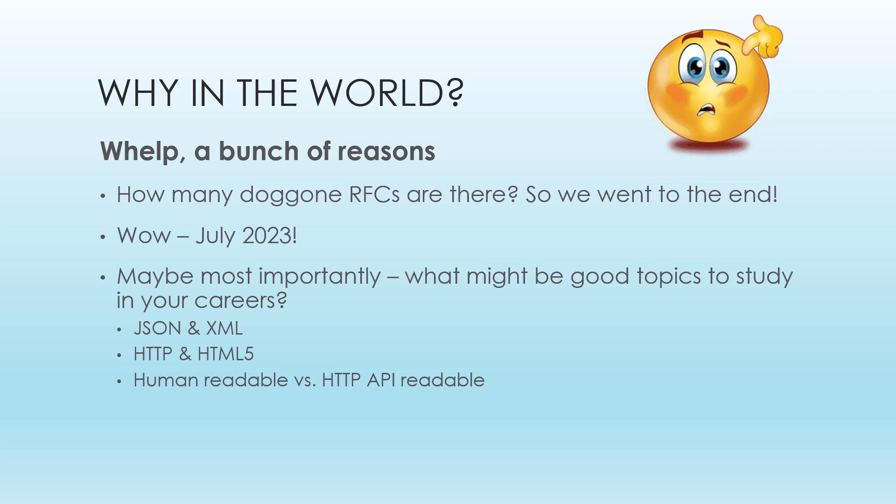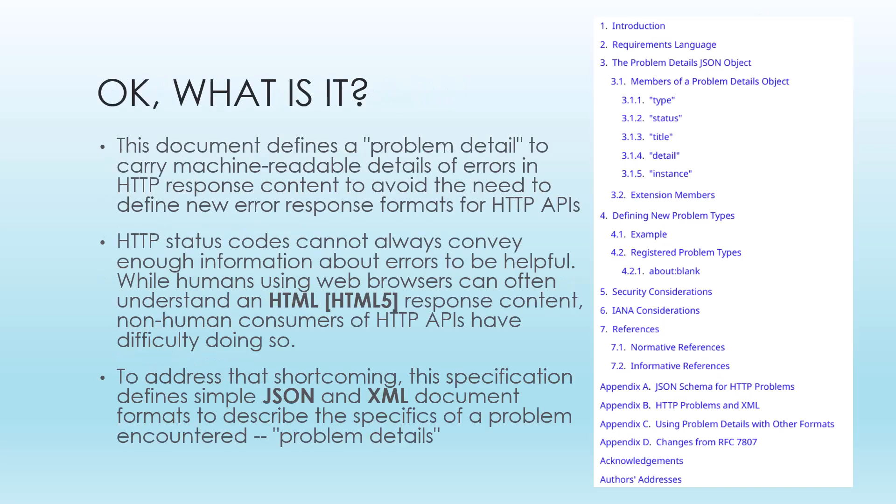The fun thing about this is that HTTP and many standards today are designed to be human-readable — you look at the error codes and sort of know what they're doing. But an HTTP API, some interface with a website or client, gets a code back, and sometimes it's not really helpful for the API itself. That's the whole idea of this RFC. It defines a problem detail to carry machine-readable details of errors, to avoid defining new error response formats for HTTP APIs.